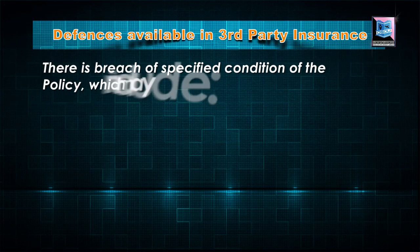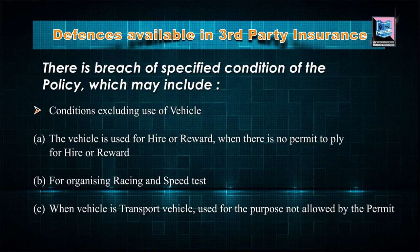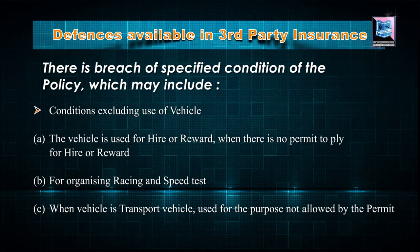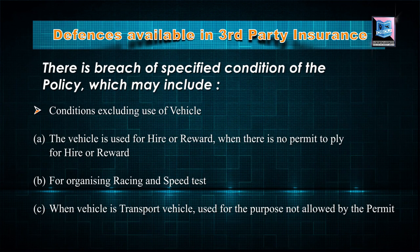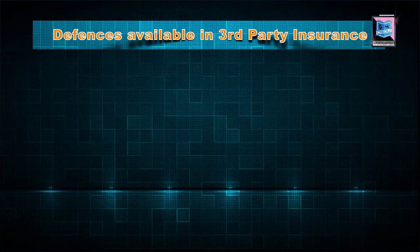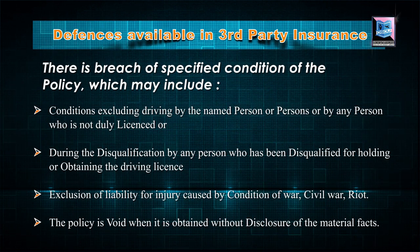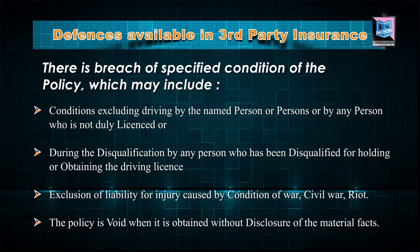Defences are available to the insurance company in third-party insurance. These include: a breach of a specified condition of the policy, such as excluding the use of the vehicle for hire or reward when there is no permit; organising a race or speed testing; use of a transport vehicle for a purpose not allowed by the permit; conditions excluding driving by unlicensed persons; disqualification of the driver; exclusion of liability for injury caused by war, civil war, or riots; and a policy being void when obtained without disclosing material facts.